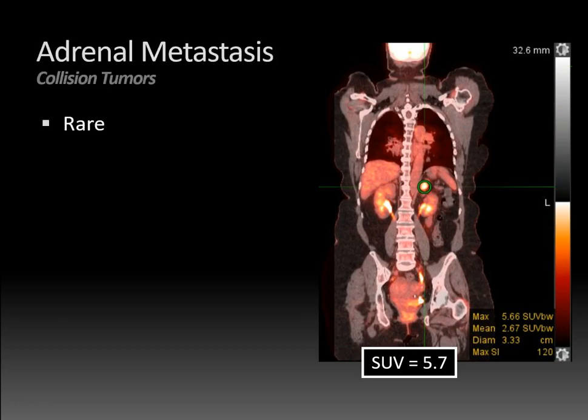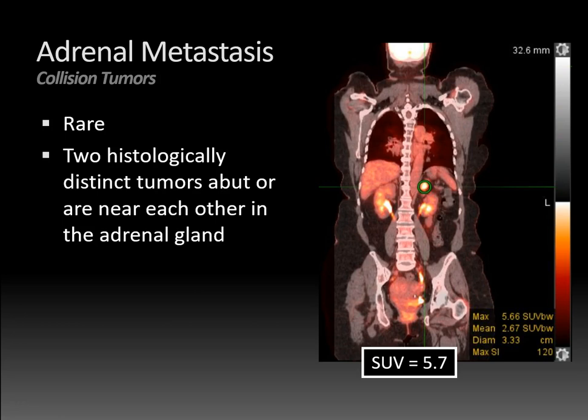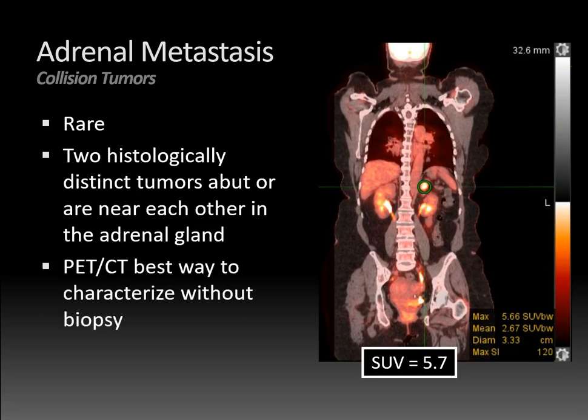Collision tumors are rare. A collision tumor is when two histologically distinct tumors abut or are near each other in the adrenal gland. The most common collision tumor has been reported to be myelolipoma and adenoma, but we're more worried about the metastatic type — in this case, a metastasis and an adenoma. PET CT is actually the best way to characterize these masses without doing a biopsy.